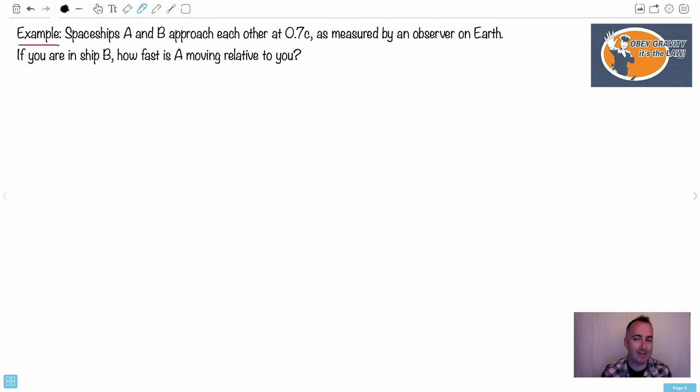And maybe let's do a practical example. I like this, obey gravity. It's the law. I actually have that on a t-shirt. That's from ThinkGeek. At least that's where I bought it years ago. So let's do an example here. We have spaceships A and B and they approach each other at 0.7C as measured by an observer on Earth.